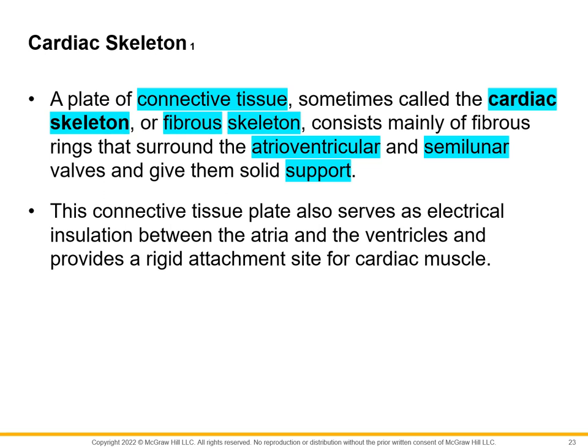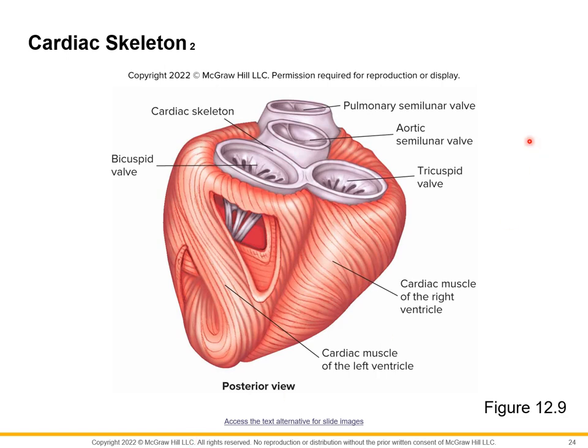The cardiac skeleton is a plate of connective tissue — also referred to as the fibrous skeleton — made up of fibrous rings that surround the atrioventricular and semilunar valves to give them support. This illustration shows the location of the cardiac skeleton supporting the aortic and semilunar heart valves.